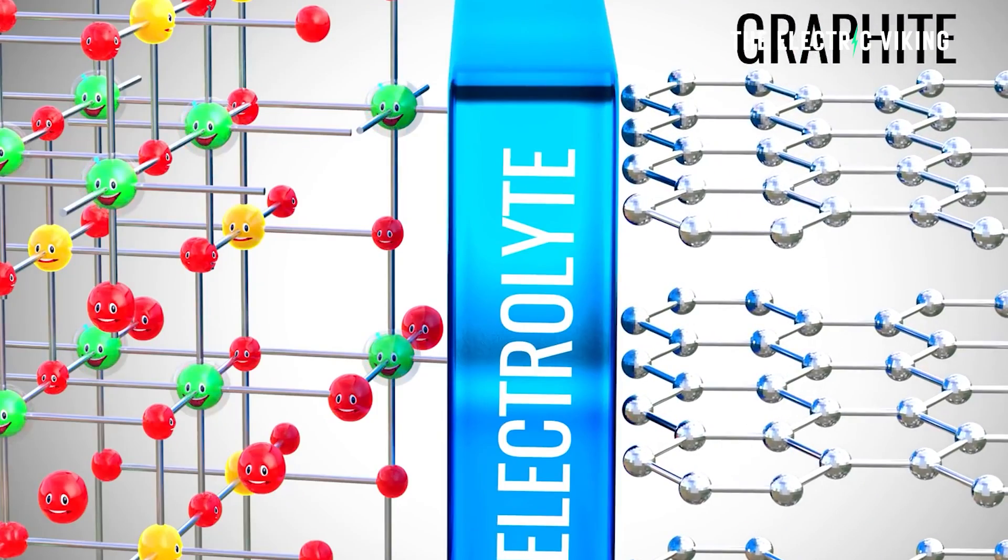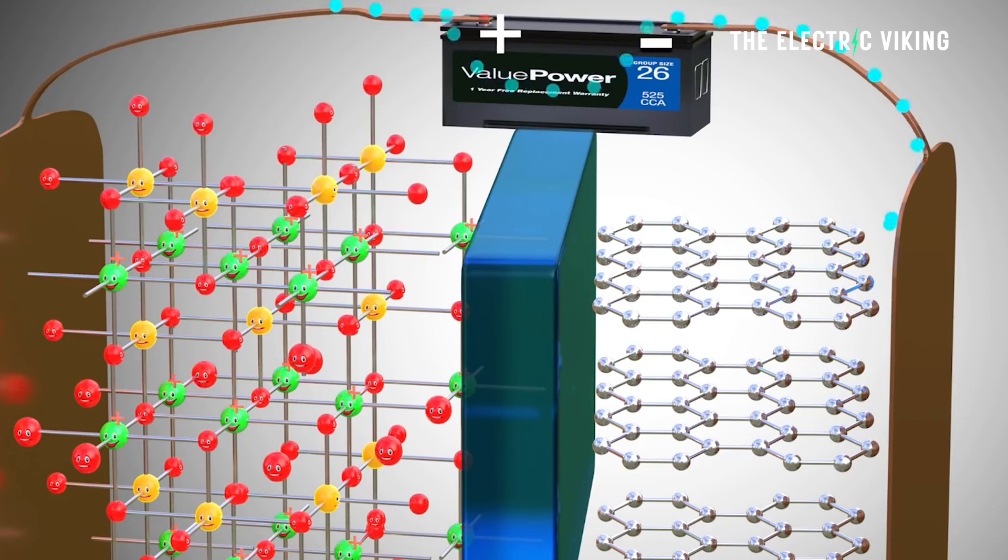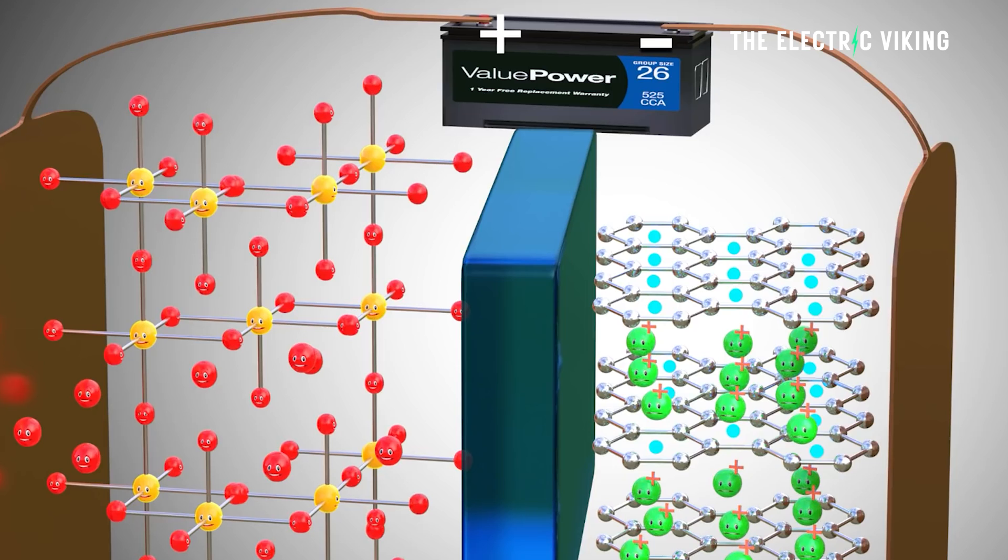The anode of a lithium-ion battery is typically made by graphite or other carbon-based materials. Graphite has been widely used because it has excellent properties for lithium-ion batteries. It serves as the host material where lithium-ions are stored during the charging process.